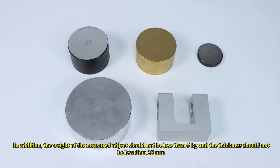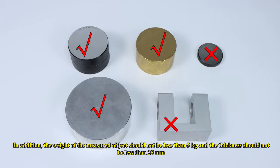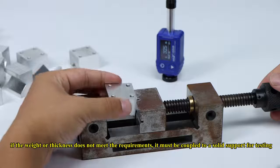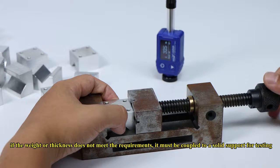In addition, the weight of the measured object should not be less than 5 kg and the thickness should not be less than 25 mm. If the weight or thickness does not meet the requirements, it must be coupled to a solid support for testing.